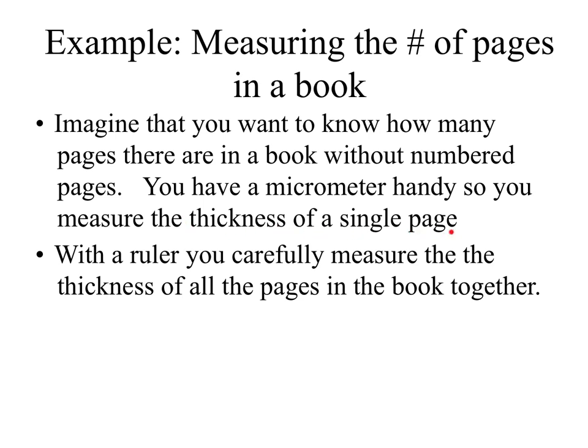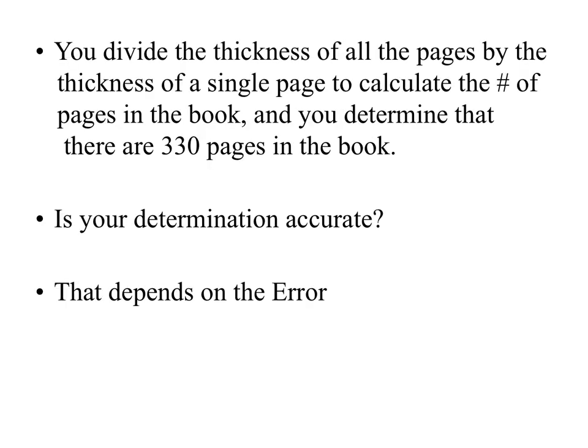You grab a single page out of the book and measure its thickness with the micrometer, then grab a ruler and measure the thickness of all the pages together. You take the thickness of all the pages measured by the ruler and divide it by the thickness of a single page measured with the micrometer. That quotient tells you how many pages are in the book.